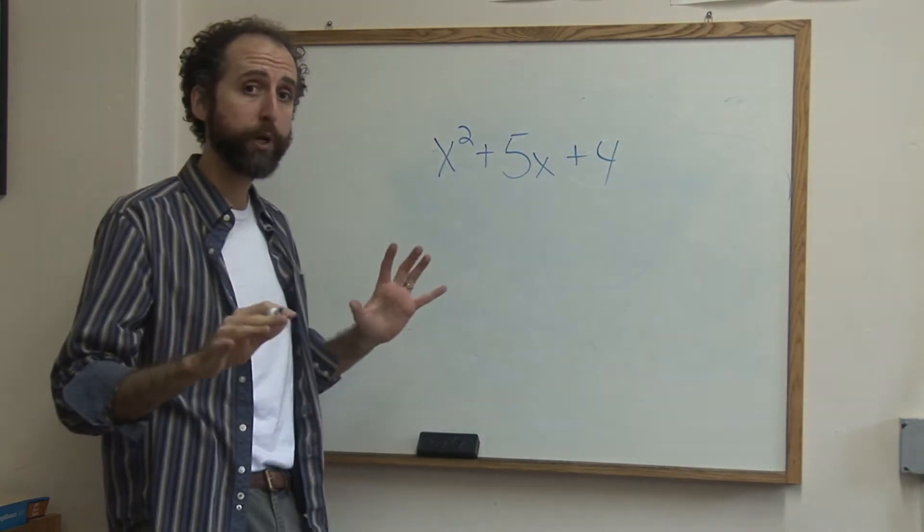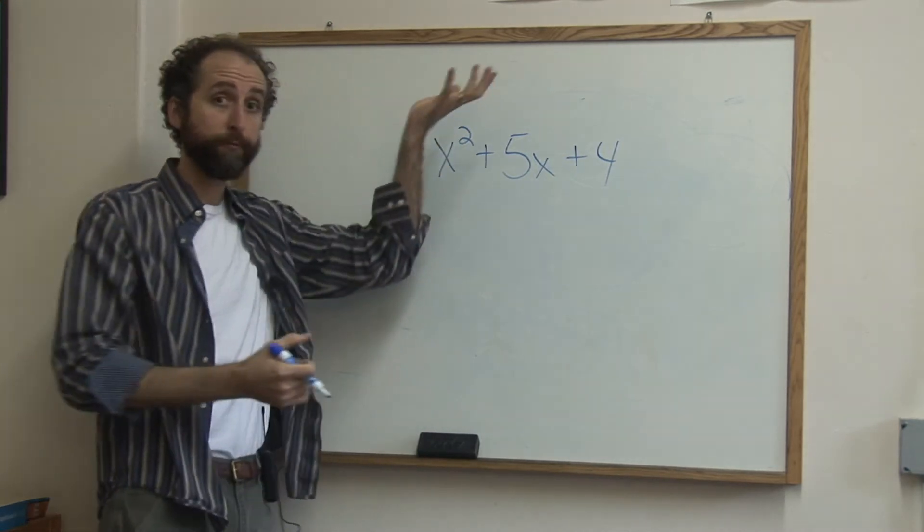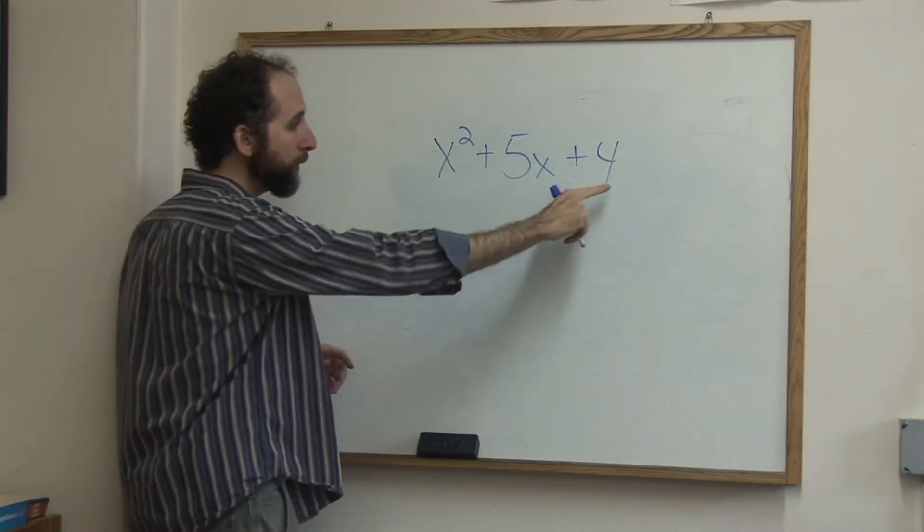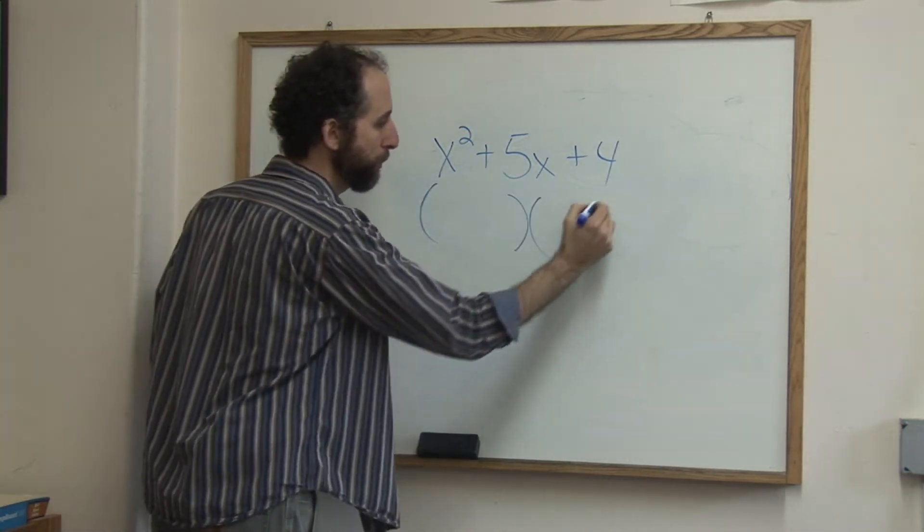When you factor a trinomial, factor by the way means break it apart into the two things that multiply to be it. So factoring and multiplying are opposites. Whenever you factor a trinomial in school, you're always going to get two parts.